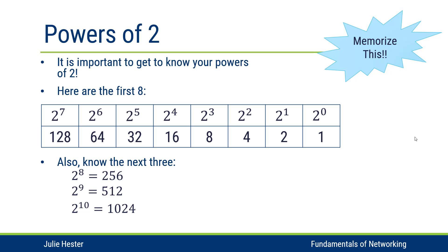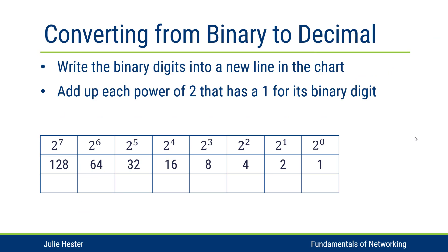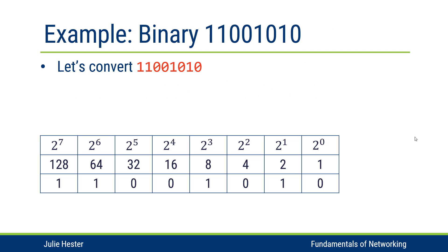Now I want to convert a binary number to a decimal number. I'm going to use that chart and write my binary digits into a new line in the chart. All I have to do to get the decimal value is add up each power of two that has a one for its binary digit. I've written out the eight binary digits into the eight columns of the chart, below each power of two, and I want to look at which powers of two have a binary one in their column.